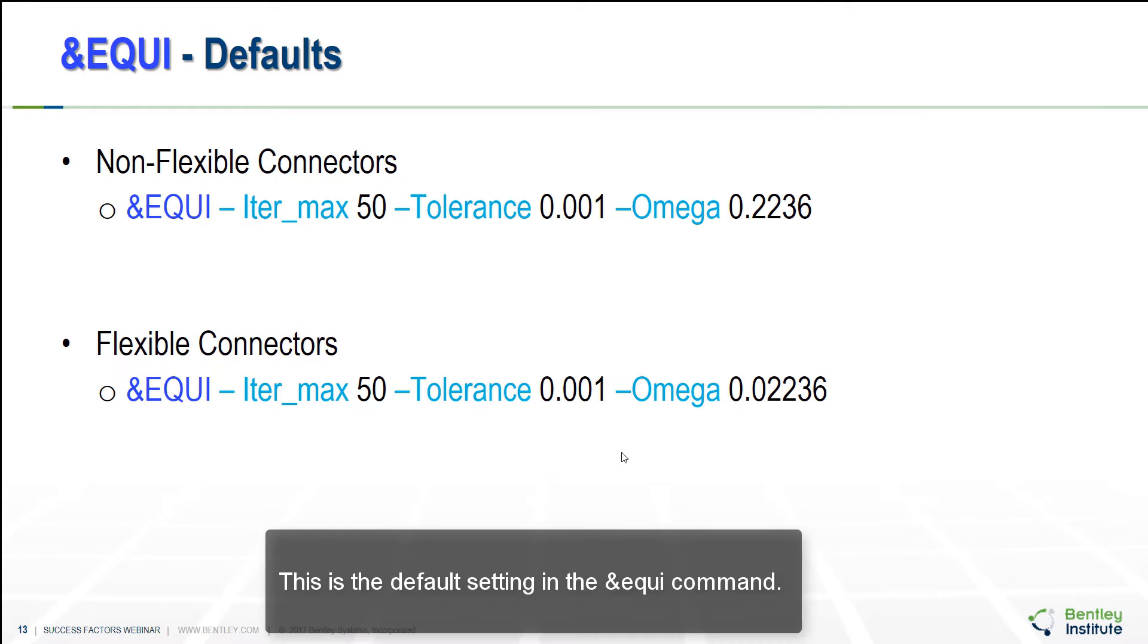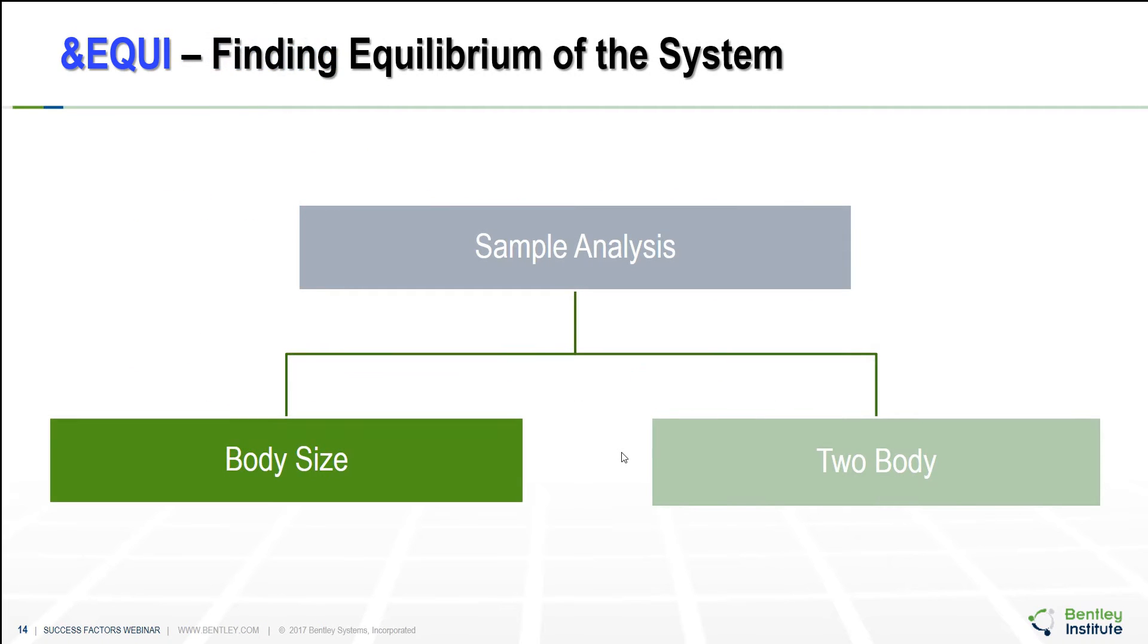This is the default setting in the &EQUI command. There are two types, one for the system with non-flexible connectors and one for the system with flexible connectors. The values shown are the default values.